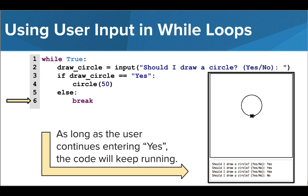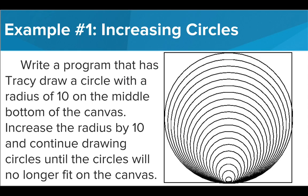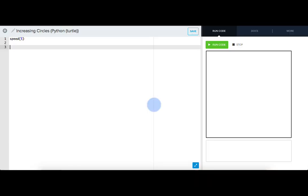Let's take a look at using while loops in the editor. In our first example, we want Tracy to draw circles starting at radius 10, where each circle's radius is 10 pixels larger than the one before. We want Tracy to stop drawing circles once they will no longer fit on the canvas. The first thing we want to do is send Tracy to the starting position at the bottom middle of the canvas.